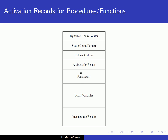The activation records for procedures and functions are larger than those for blocks, though some information is the same. They contain local variables, intermediate results, and a dynamic chain pointer — the same as for blocks. Additionally they include a static chain pointer (to be discussed later), a return address, an address for the result in case of a function call, and parameters, since functions can have formal parameters but blocks cannot. The activation record for blocks is essentially a subset of the activation record for procedures and functions.